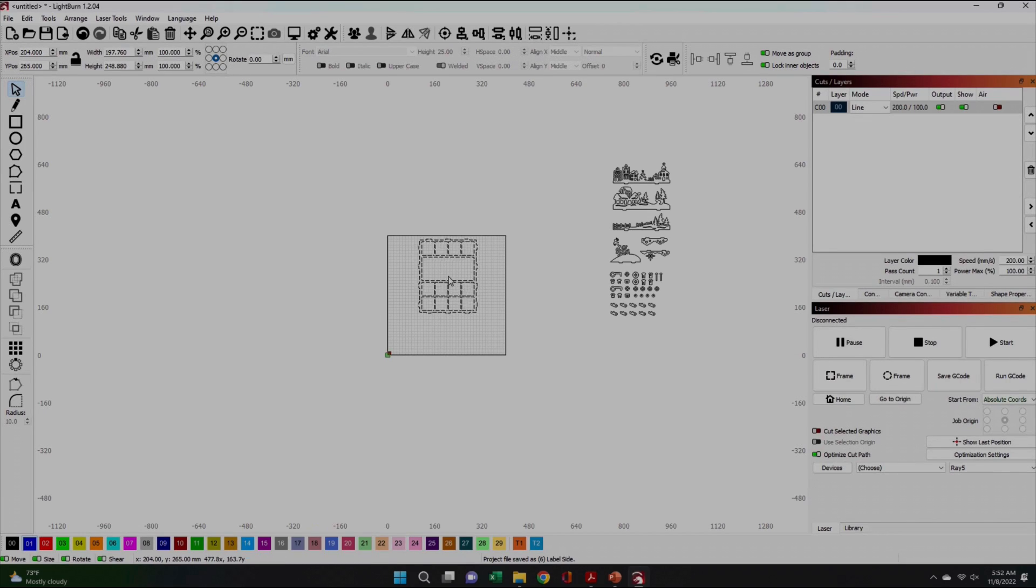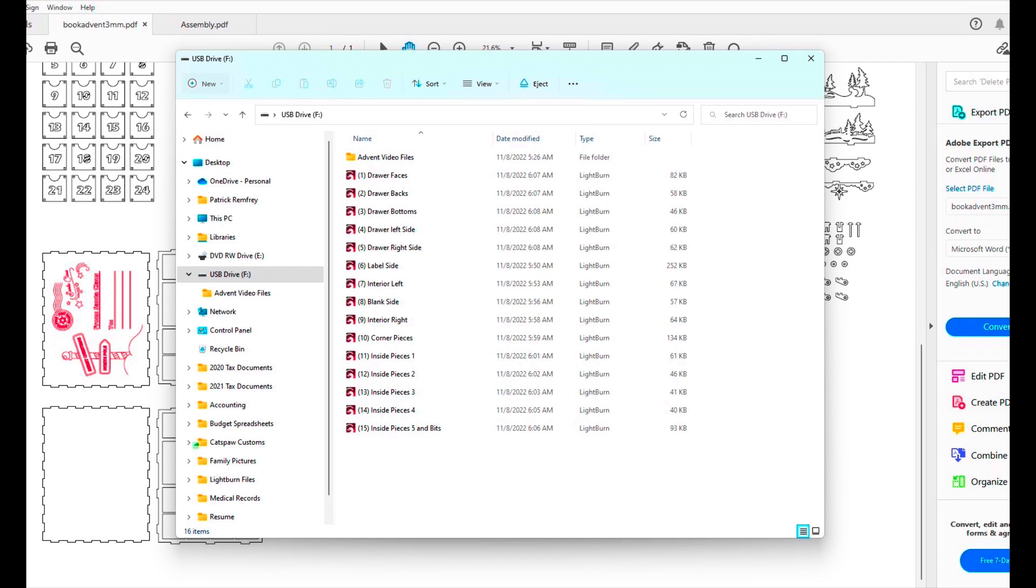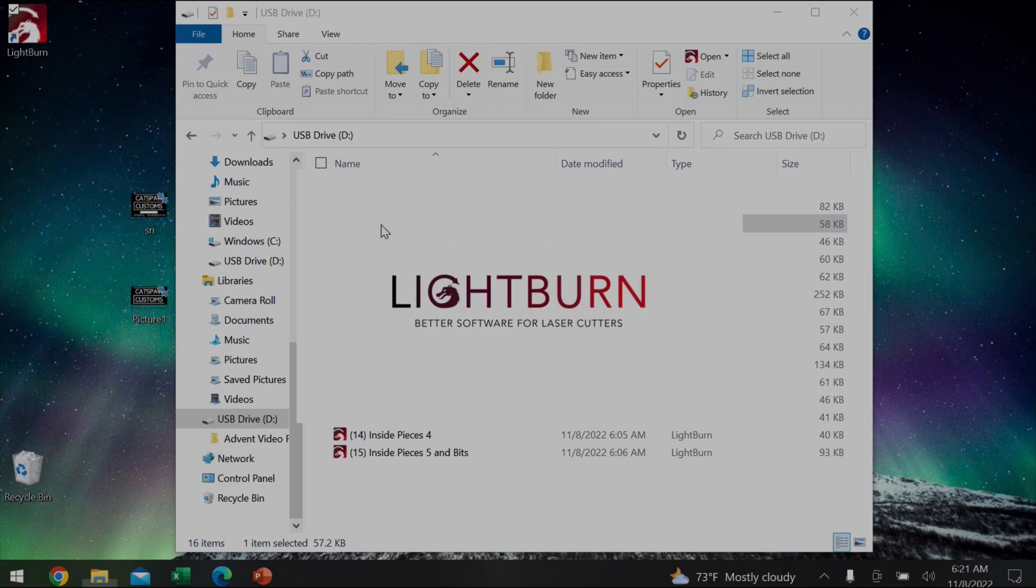I did try to consolidate some of the smaller parts together on single sheets of plywood to save material. With the advent calendar plans divided into 15 separate files, I was able to begin cutting out the pieces.